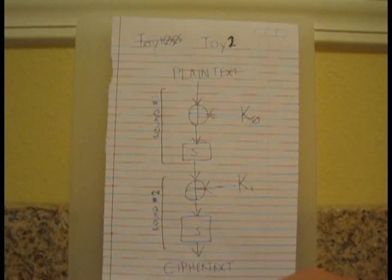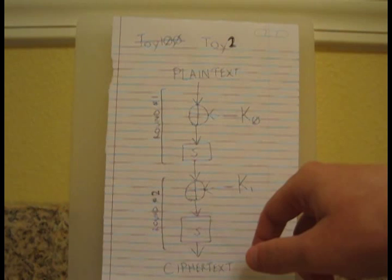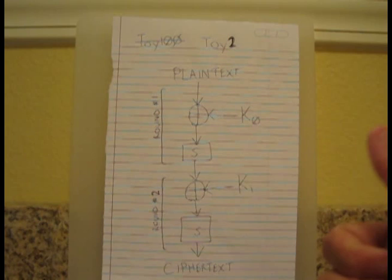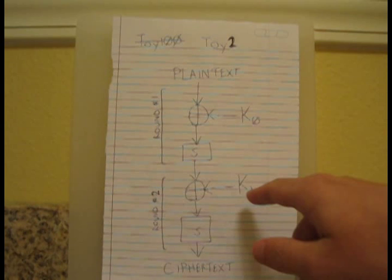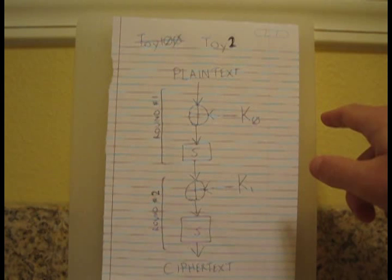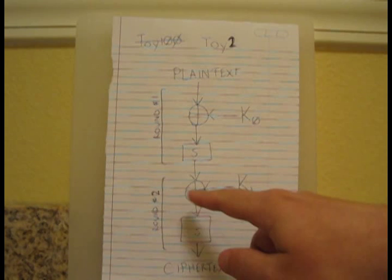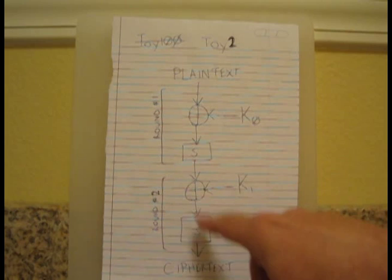The S-Box is meant to be pseudo-random with properties to prevent linear and differential attacks, but for us we don't really care. Just pretend it changes the value in some predefined way that the attacker knows — so we can reverse through it. That's round one. Then the same thing happens again, except this time we XOR with subkey one, another eight bits of the key. So the full key is 16 bits long — eight-bit block, 16-bit key. It XORs with subkey one, goes through the same S-Box, and produces the ciphertext. That's two rounds of this toy cipher's round function.